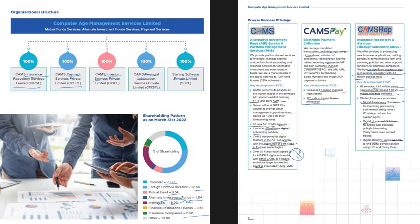On page seven, covering the corporate structure, CAMS has five wholly-owned subsidiaries created for specific purposes — one for insurance repository services, one for payment services, one for investor services, and one called Sterling Software Private Limited. We must understand: are these subsidiaries value-contributing, are they generating profit, how much money has gone into them, and what is their purpose? There is also a shareholding breakup — promoter shareholding is not high, and we should understand why it has gone down. On the positive side, there is significant FII, mutual fund, and AIF ownership, with 19% individual shareholding.